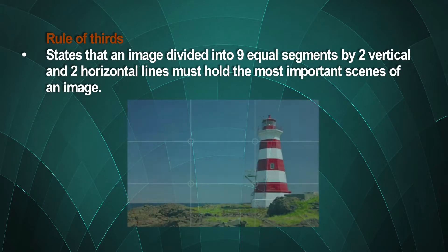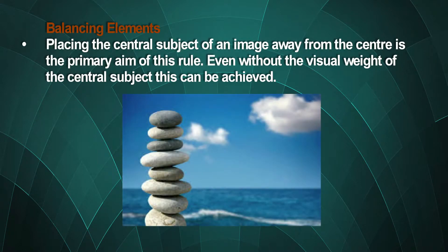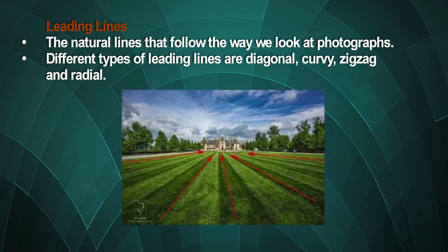Rules of composition: there are some rules considered as standards while making composition. Rule of thirds states that an image divided into nine equal segments by two vertical and two horizontal lines must hold the most important scenes of an image. Balancing elements: placing the central subject of an image away from the center is the primary aim of this rule, even without the visual weight of the central subject. Leading lines are the natural lines that follow the way we look at photographs. Different types of leading lines are diagonal, curvy, zigzag and radial.